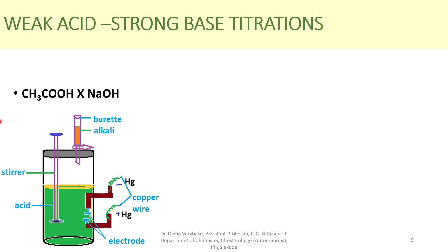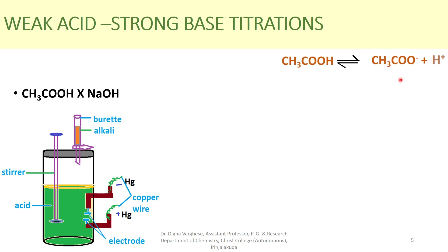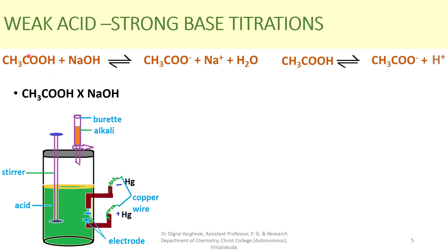Since acetic acid is a weak acid, it is ionized in equilibrium as acetic acid ⇌ acetate ion + H+, meaning it is only partially ionized. So the initial conductance of the solution is low. On adding NaOH, the reaction proceeds: acetic acid reacts with NaOH forming sodium acetate, which is a strong salt compared to acetic acid.